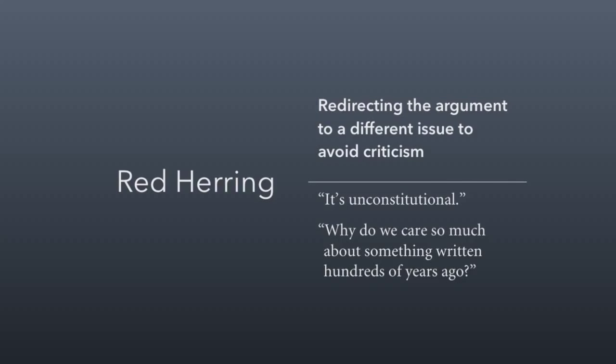Red herring is where you redirect the argument to a different issue to avoid criticism. For example, somebody says 'Your position is unconstitutional,' and you reply, 'Why do we care so much about something written hundreds of years ago?' That's changing the argument — throwing out a red herring. You draw the person into a debate over whether the Constitution is valuable when the original criticism was simply that your position disagreed with the Constitution as it exists today.